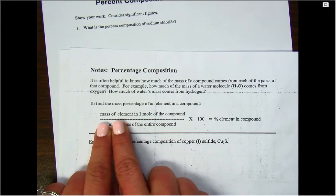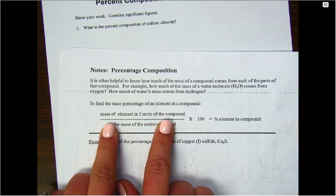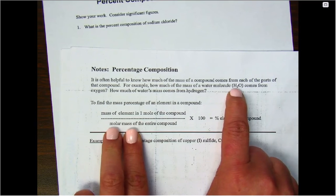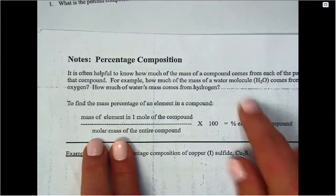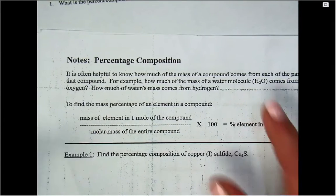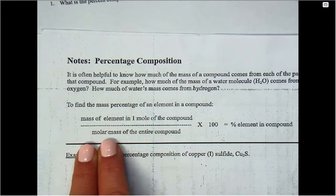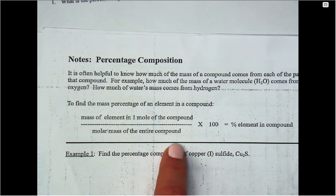Basically what we're going to be using is the mass of an element in one mole of the compound. So if there's two of that element, like two hydrogens, we would then have to multiply two times the molar mass of it so that we know how much of that total mass was hydrogen contributing. And then you're going to have the total molar mass of the entire compound.